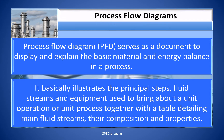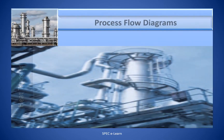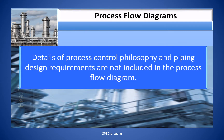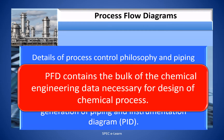It basically illustrates the principle steps, fluid streams and equipment used to bring about a unit operation or unit process, together with a table detailing main fluid streams, their composition and properties. The details of process control philosophy and piping design requirements are not included in the process flow diagram. Process flow diagram acts as a precursor to generation of piping and instrumentation diagram. The PFD contains the bulk of the chemical engineering data necessary for design of a chemical process.